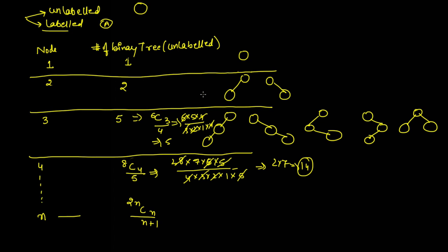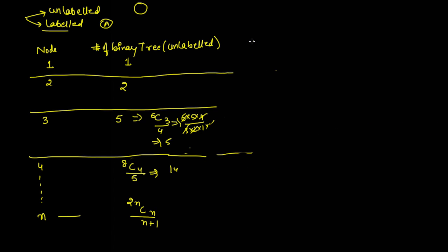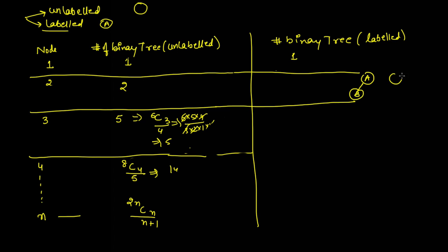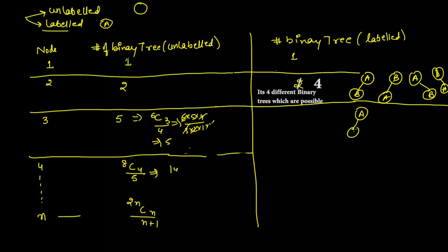All of the above was for unlabeled binary trees. Now we can extend this question for labeled binary trees as well. How many different binary trees are possible when nodes are labeled? With one node, only one binary tree is possible. With two nodes A and B, we can have A-B and B-A in different arrangements, giving four labeled trees of two different shapes.